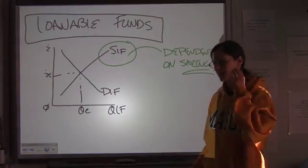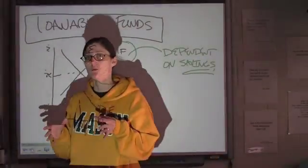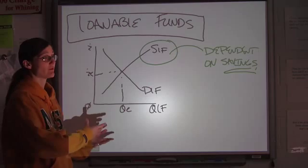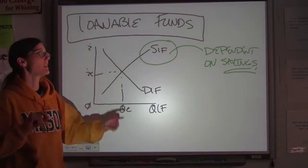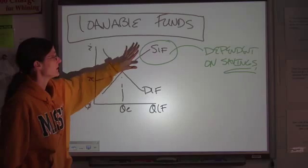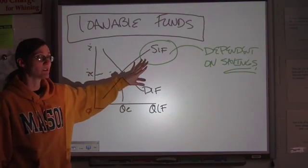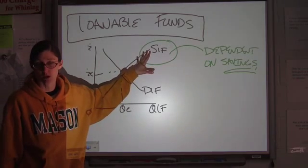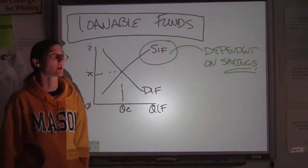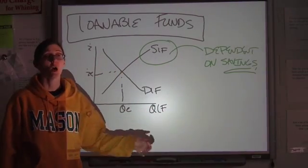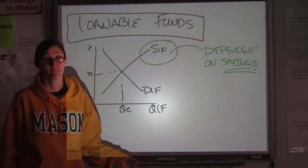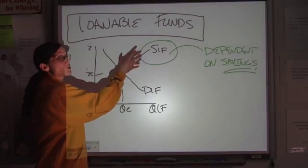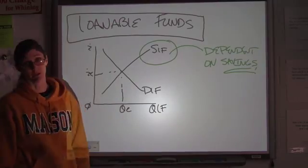Now, this is where it gets a little weird, because we said when we talked about ADAS that savings was a leakage, because when people save money, they're not spending it. But in this market, it's a positive, because what happens is that the more money people save, the more money banks have available to make loans. And who are they loaning it to? We're talking about business spending. We're talking about interest-sensitive consumer spending. So yes, it's a leakage from the spending stream, but it's also a big contributor in this market to how much money the banks have available.